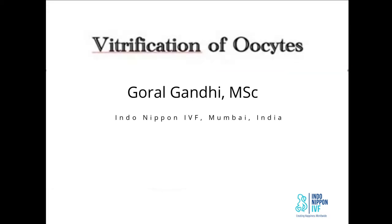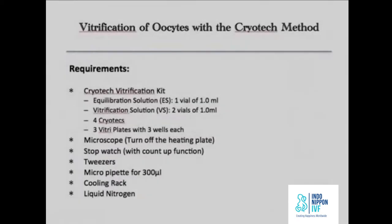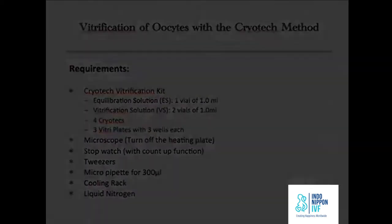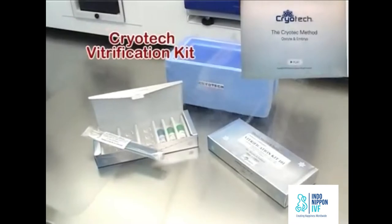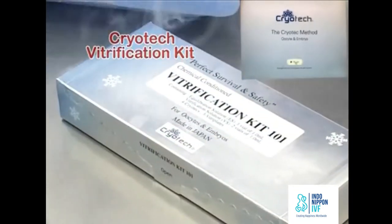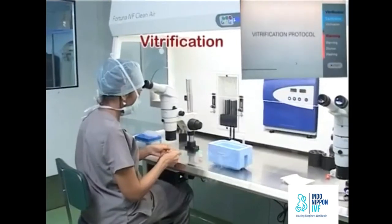Vitrification of oocytes using the Cryotech method. Before beginning the process, ensure that the microscope stage heating is turned off and the room temperature is around 25 to 27 degrees centigrade.